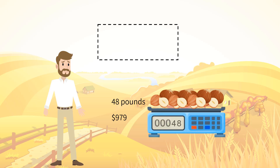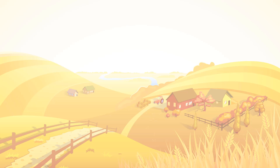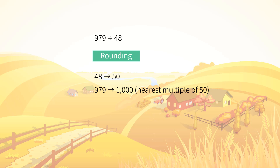How much was the cost of each pound of hazelnut? To calculate the pound price of hazelnut, we do 979 divided by 48, and we can make an estimate. Do you still remember the estimate we did in multiplication? Here we do the same rounding first. For 48, we round it to 50 as the nearest 10. For 979, we try to round it to the nearest multiple of 50, so we round 979 to 1,000.